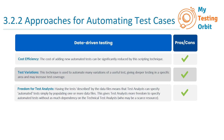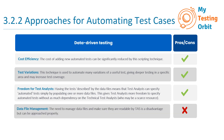In addition to the pros, there are also a few cons associated with this approach. The first one is data file management — the need to manage data files and make sure they are readable by the test automation solution is a disadvantage but can be approached properly. In our login example, maintaining the 'logindata.csv' file with accurate and up-to-date test data is crucial. Proper version control and data management practices will be required.